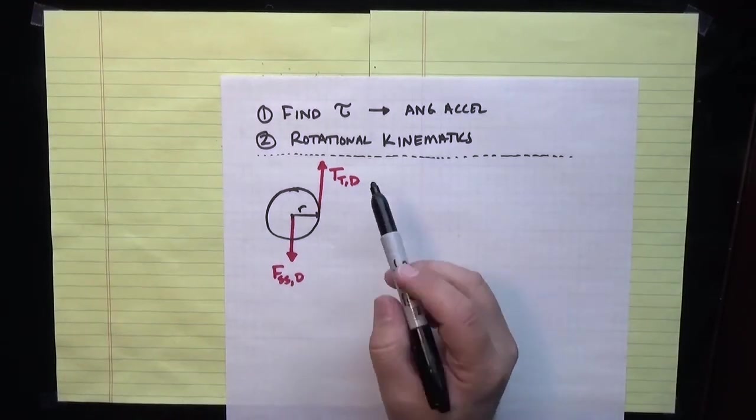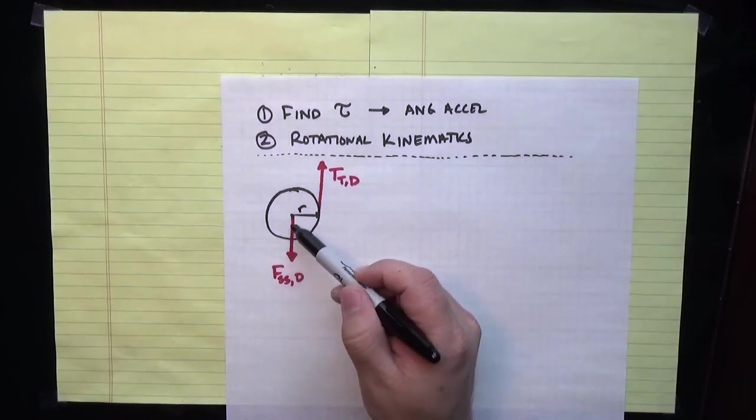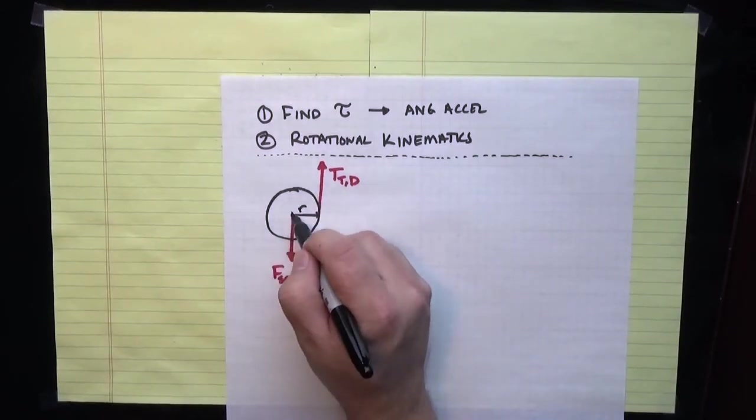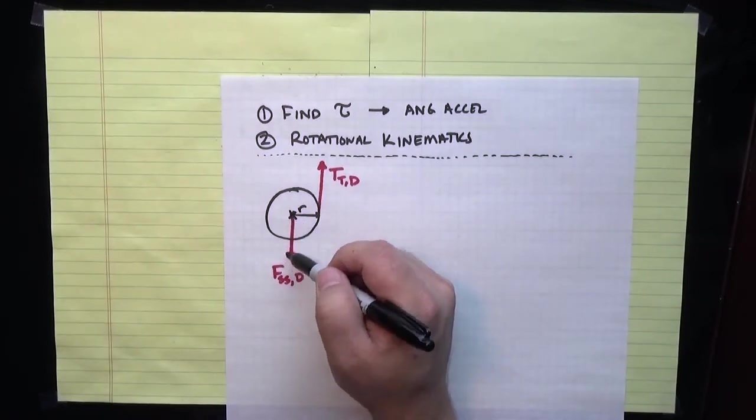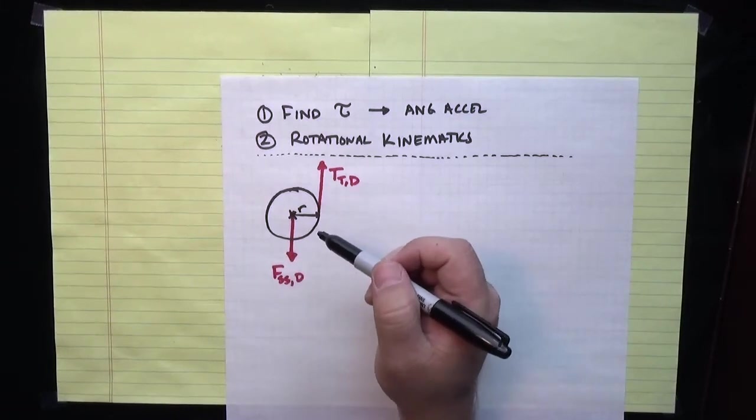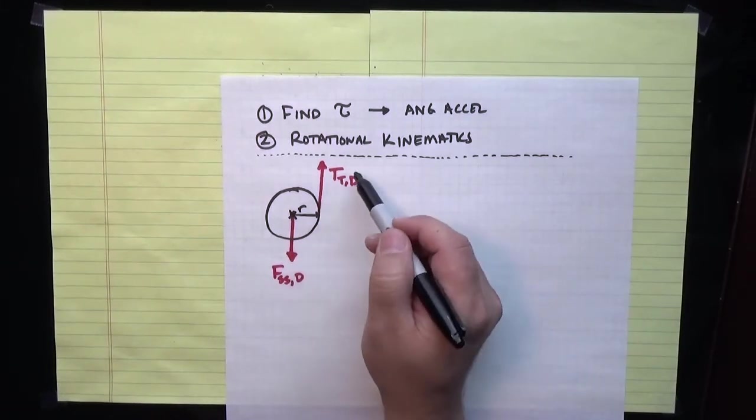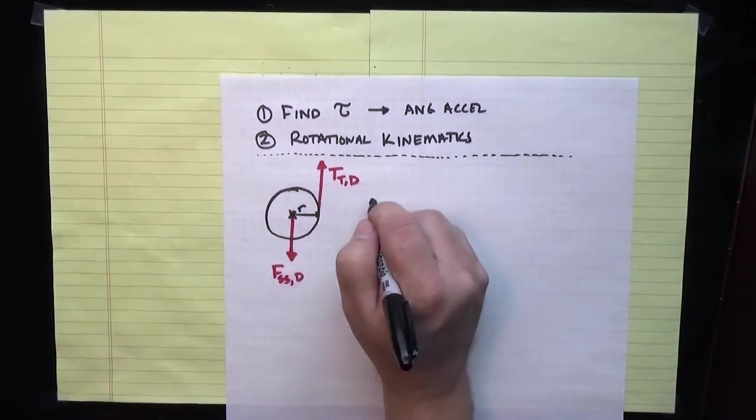If I'm thinking about torques, this force goes directly through the axis of rotation, through the center of the drum there, which means its lever arm is zero, so this force produces no torque. The only force that can produce torque in the problem is the tension.